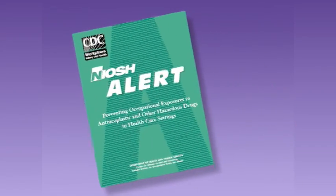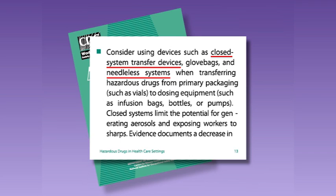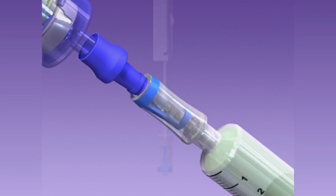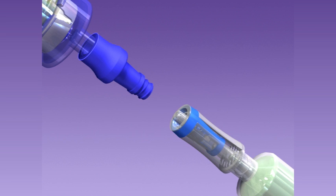NIOSH recommends the use of closed systems for the handling of hazardous drugs. Spiros is the only universally compatible device that closes the mail end of preparation and administration equipment. Spiros can be attached to any mail lure to create a closed system. It eliminates needles and adapts to any system without the use of any additional connectors or components.